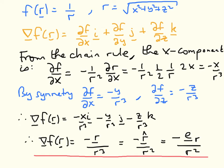The next exercise is something very similar and actually occurs in many scientific applications. The scalar field is 1 over R, where R is again the distance from the origin to the point with coordinates X, Y, Z. Using the definition of the gradient and the chain rule, I'll point out that this is symmetric under exchanging X and Y, X and Z, or Y and Z. So I'll calculate one component and then by symmetry write the other two down.